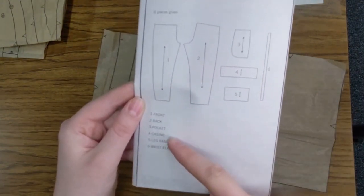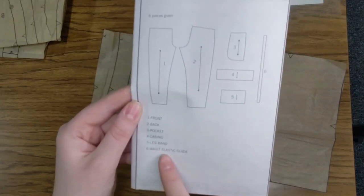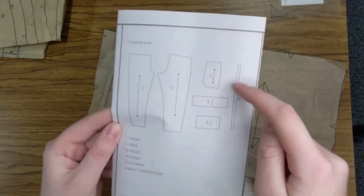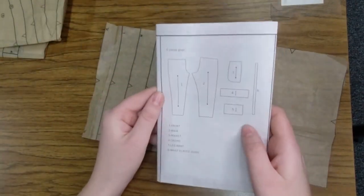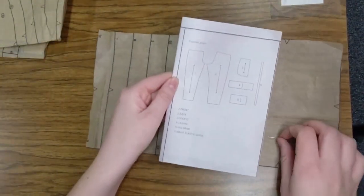So we have a front, back, pocket, casing, leg band, and waist elastic guide. This is not going to be cut out on our fabric. It will be cut out on the elastic. But you need to cut out each of these pieces from your pattern tissue.